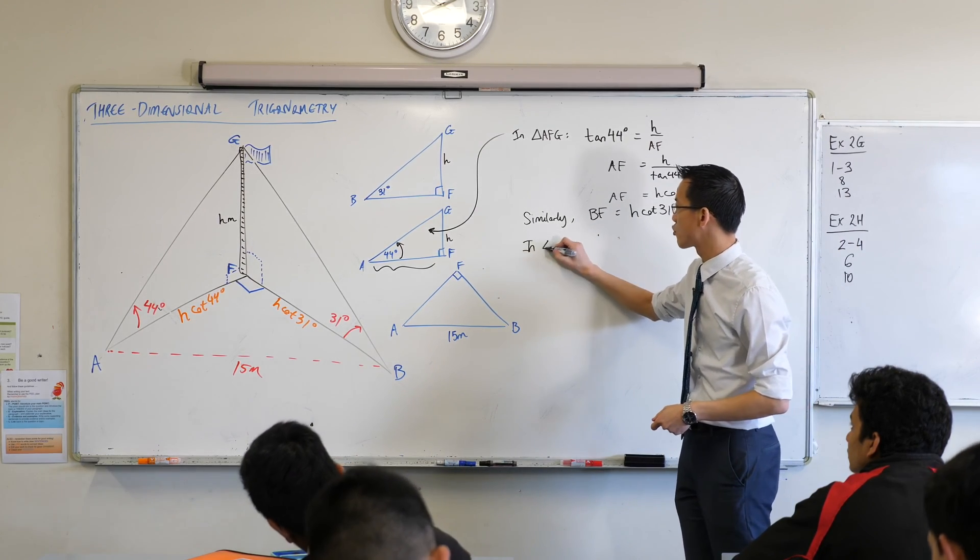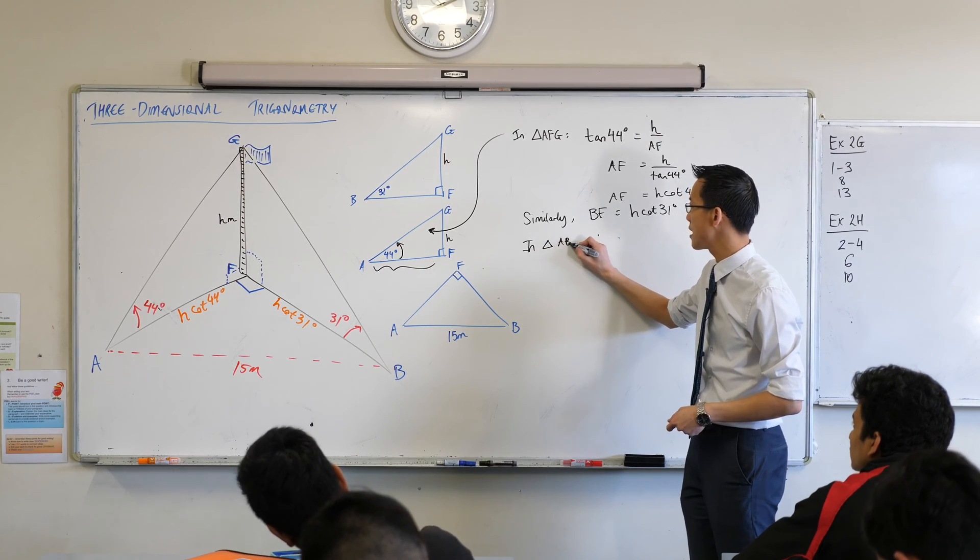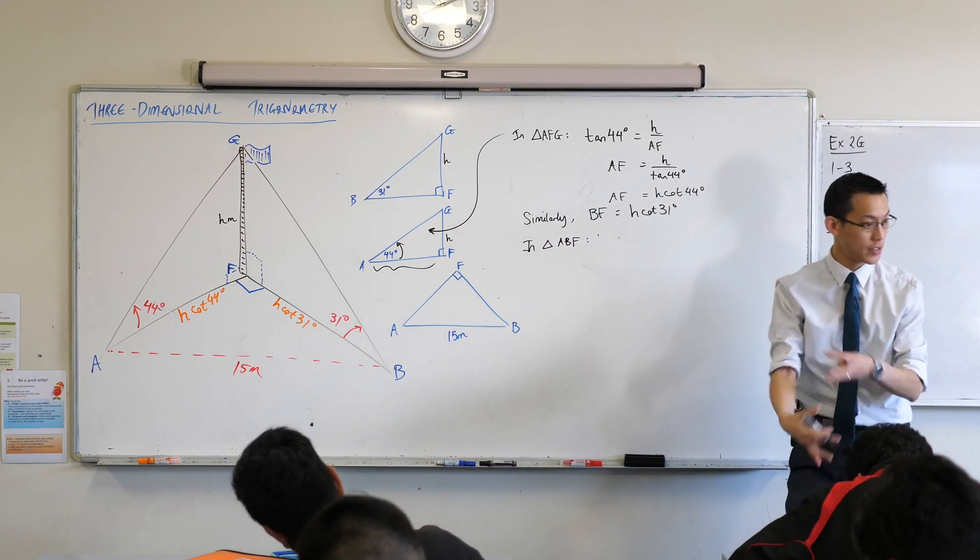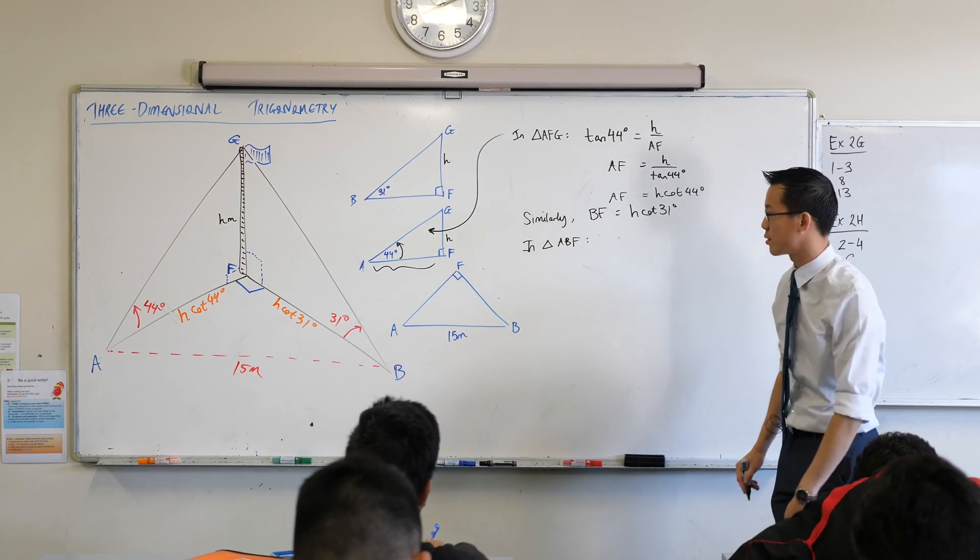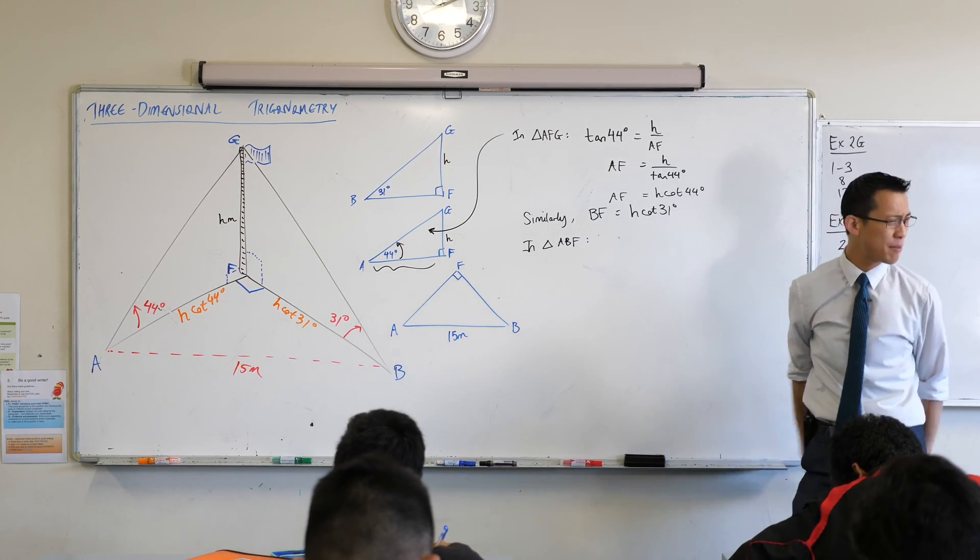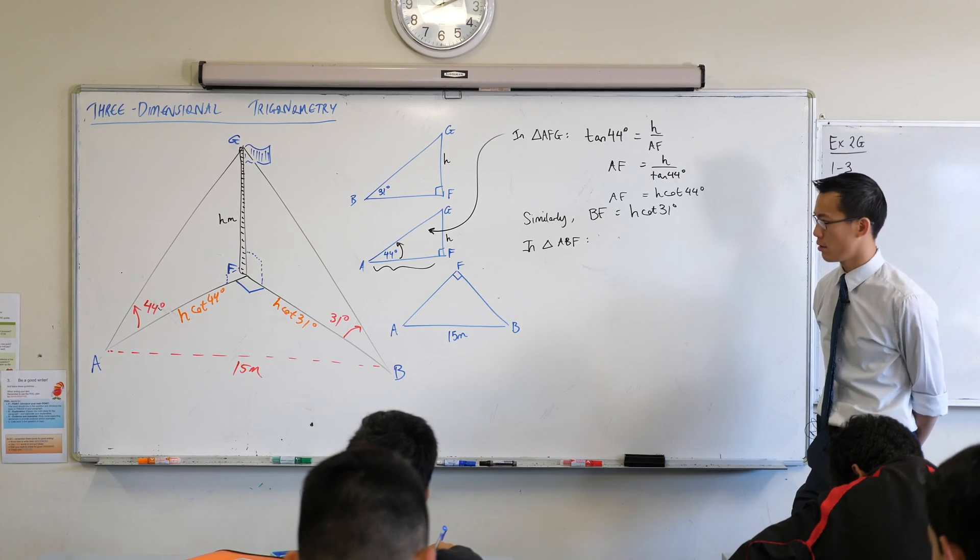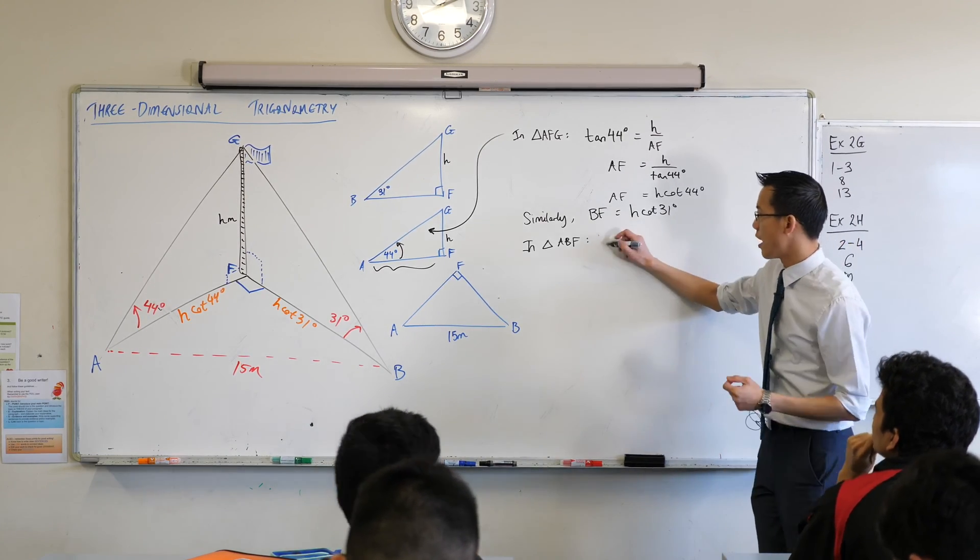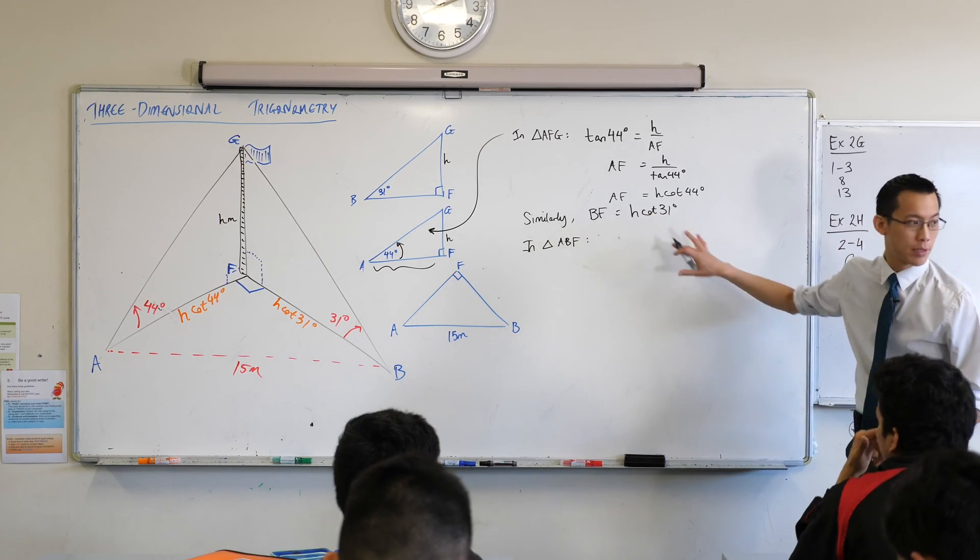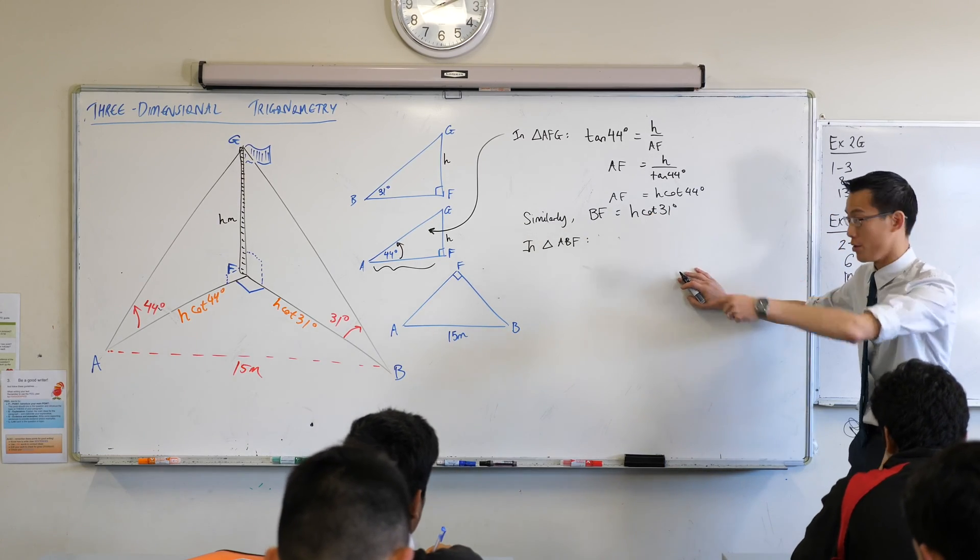So I'm going to say in triangle ABF, because again, I'm now thinking of a different triangle to state this in. I'm just going to go ahead and state Pythagoras. Let's see, which one's the hypotenuse? Have a look. It's the 15 in mine, and you'd obviously use your own length for yours. So I'm going to have whatever squared plus whatever squared equals that hypotenuse squared, 15 squared.